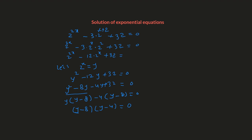These are the factors of the quadratic equation. We set y minus 8 equals 0 and y minus 4 equals 0 separately. Adding 8 and 4 to both sides respectively, we get y equals 8 and y equals 4. However, this is not the final solution, because our original equation has the variable x. We solved the quadratic in terms of y, so we still need to figure out the solution in terms of x.